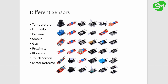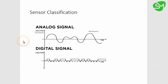Depending on the type of output they give, sensors are classified into two types: one is analog sensor and another one is digital sensor. Let's understand what these two are.